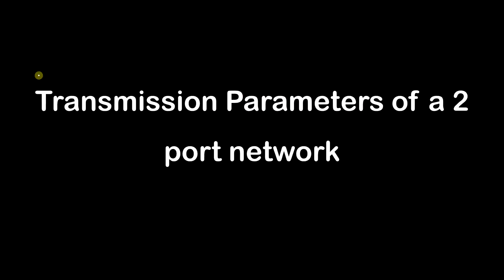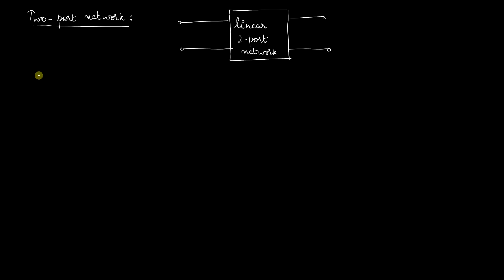The Transmission Parameters of a Two-Port Network. Before we solve the numericals, let me briefly revise. You have a two-port network with input voltage V1, output voltage V2, the current entering the input side represented as I1, and the current leaving the network represented as I2.